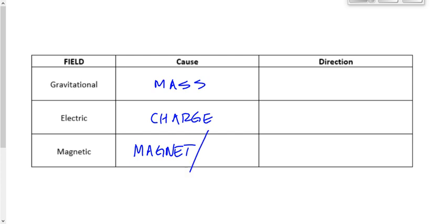We also know — and we'll learn more about this later today — that an electric current, or moving electric charges, can also generate a magnetic field. I'll star that because we haven't learned much about it yet, but it's coming later on today.